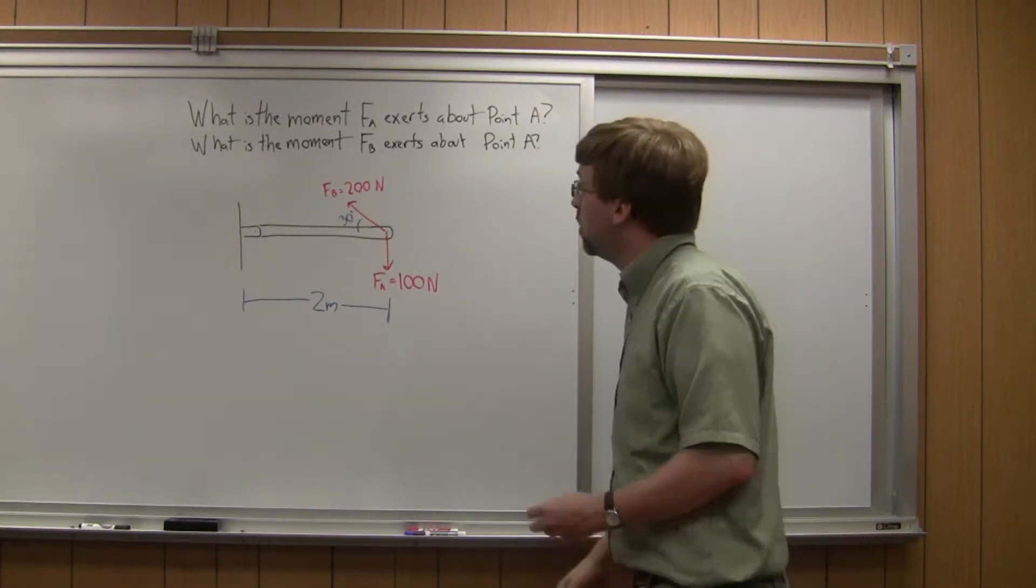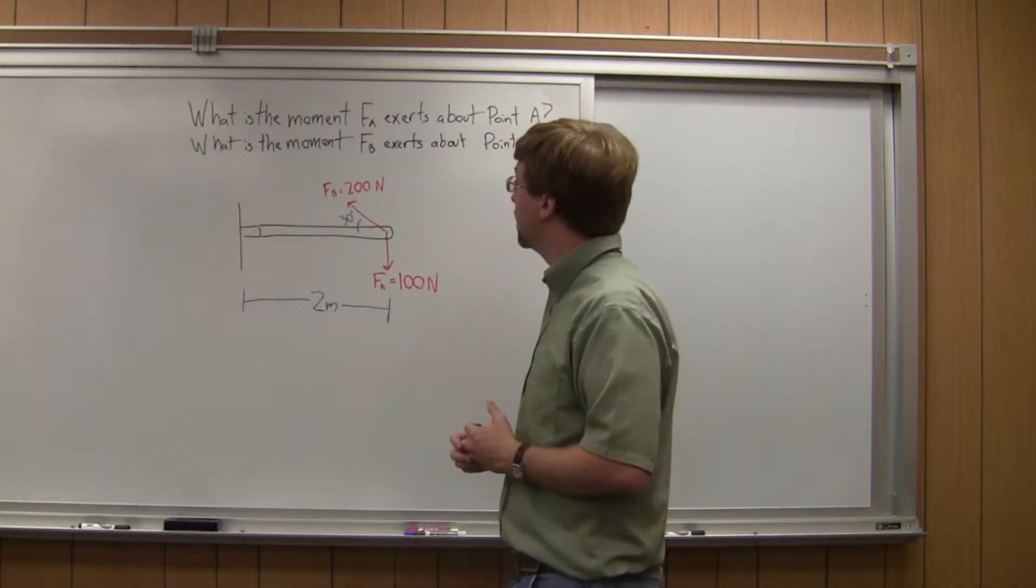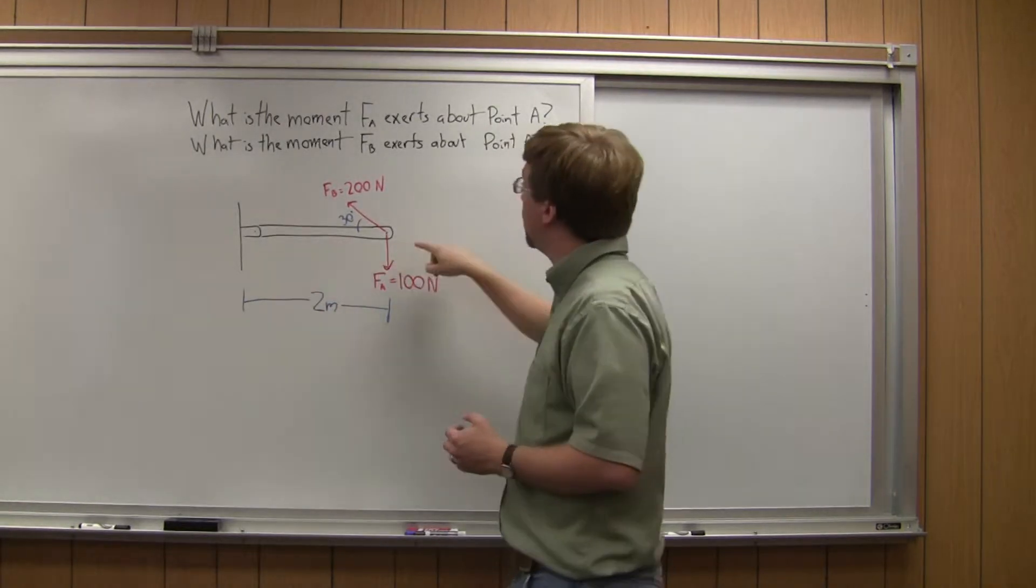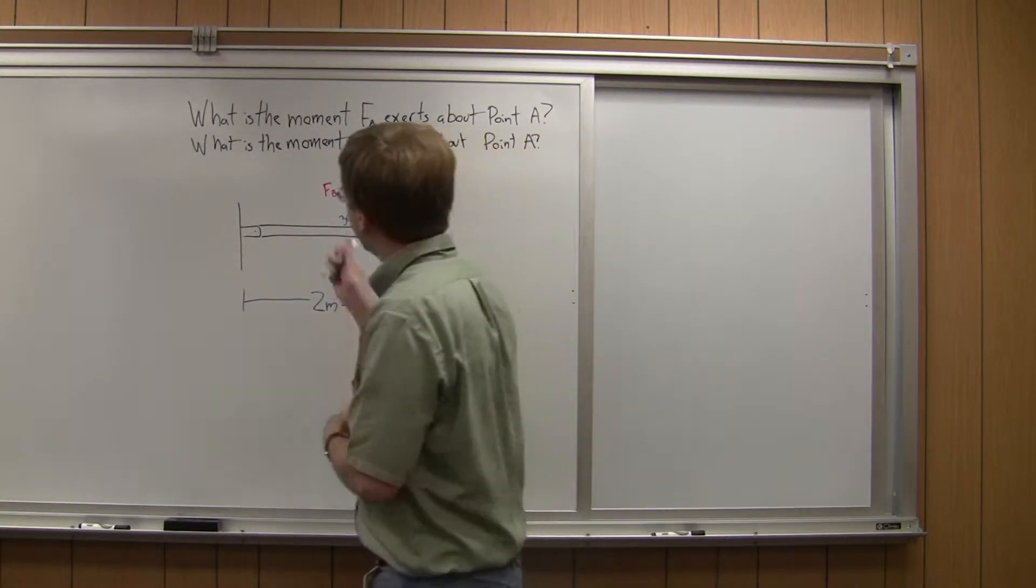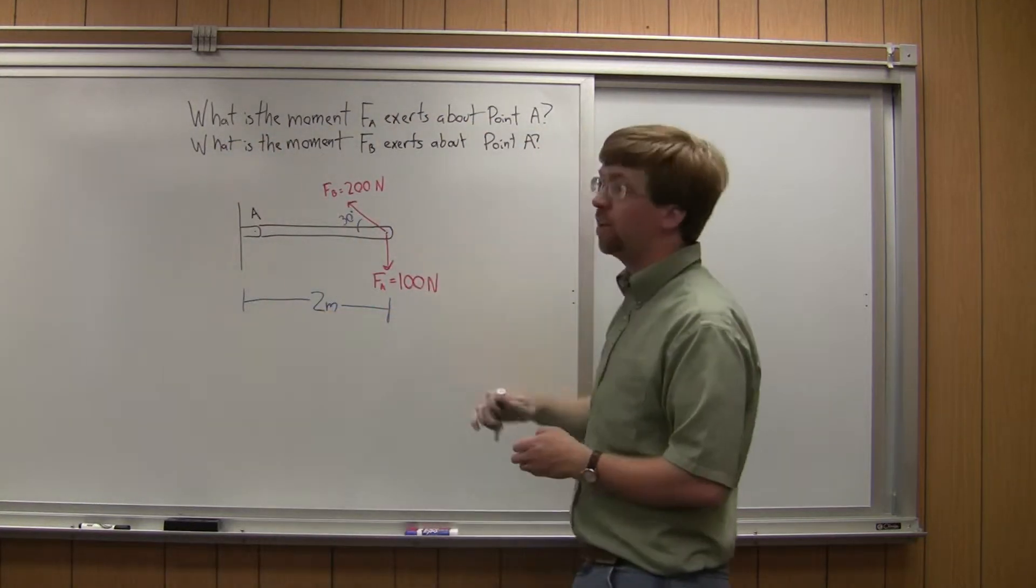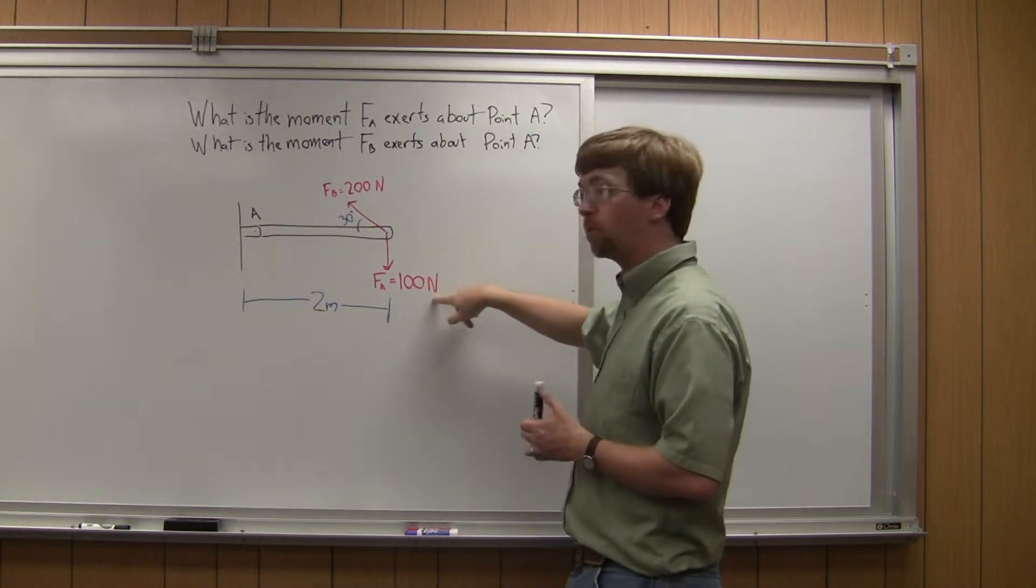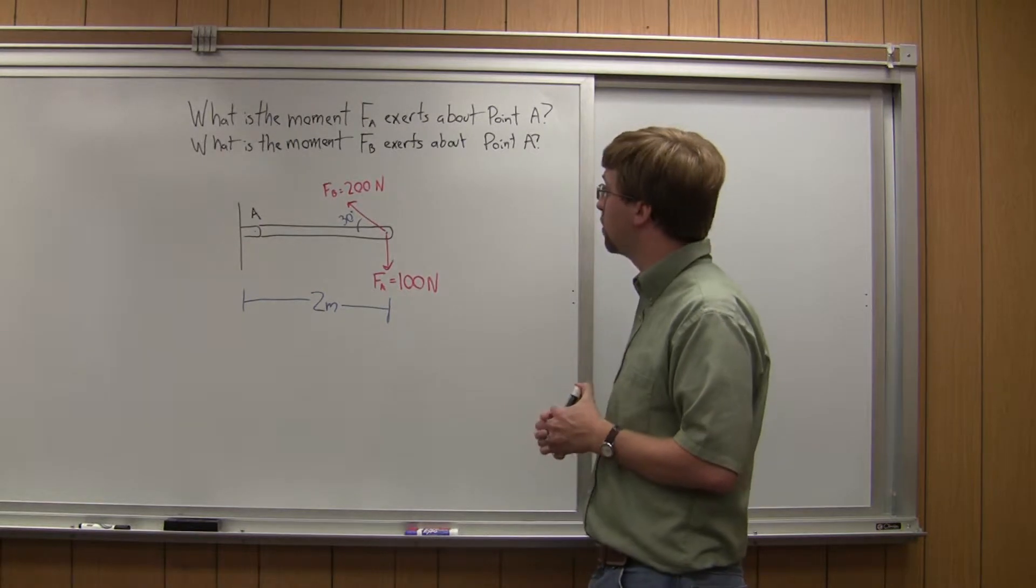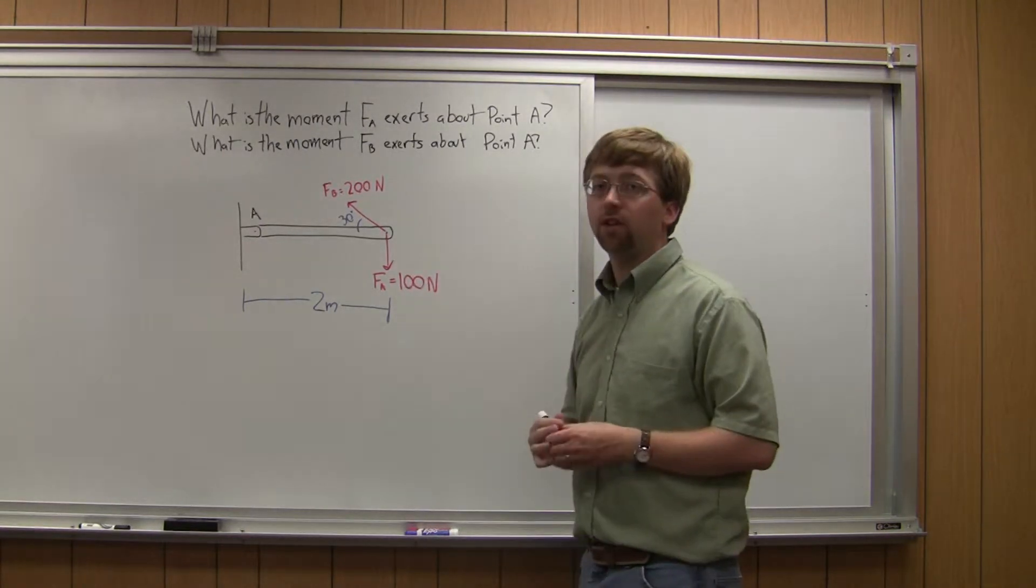Alright, for this fourth problem we're asked two questions, actually. So we've got this beam. It's got point A over here. It is two meters long, and on the end we've got two forces: FA, which is 100 newtons, and FB, which is 200 newtons, kind of back at a 30-degree angle like this.